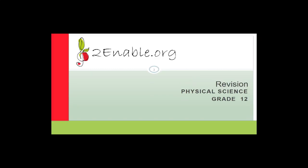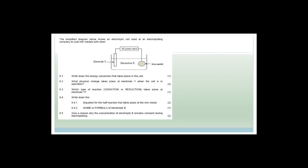Good day, great girls. Welcome to this next lesson where we continue to revise our chemistry for paper two in preparation for the paper two on Friday. In this question, we've got a simplified diagram that shows an electrolytic cell used by an electroplating company to coat iron metals with silver. Here is your iron metal, here is your electrolyte Y, and here is your electrolyte X.